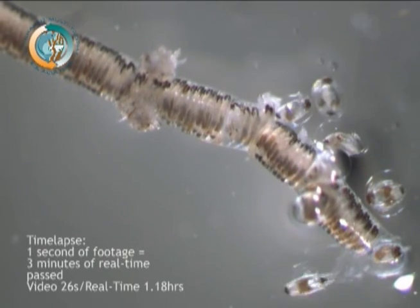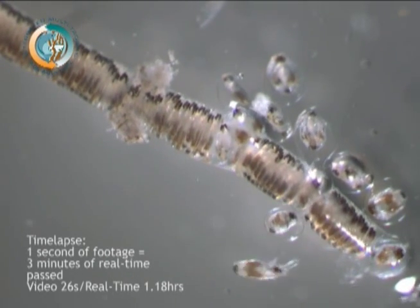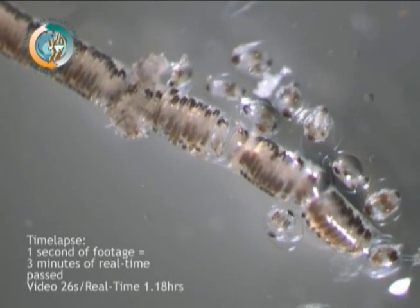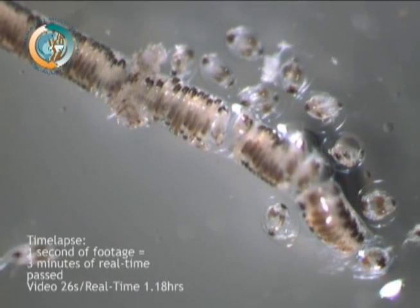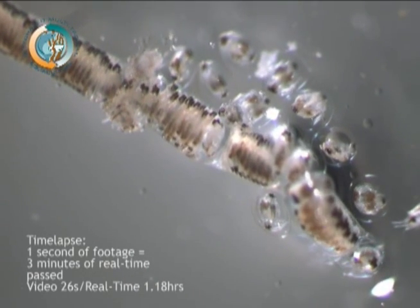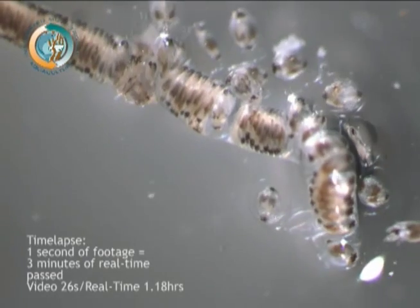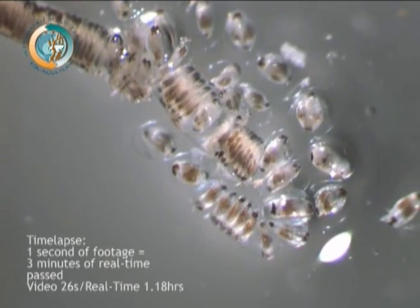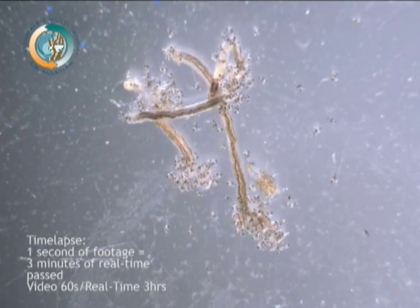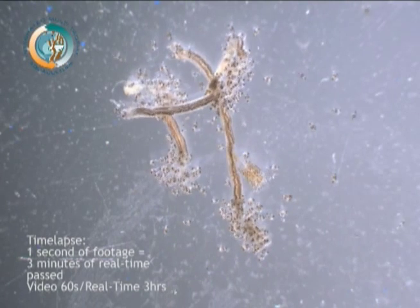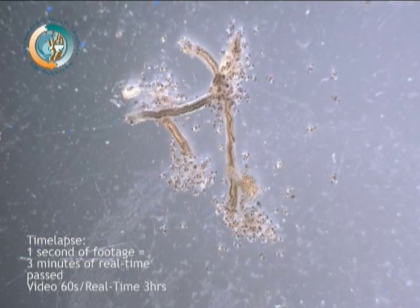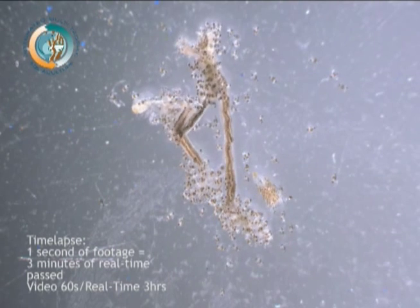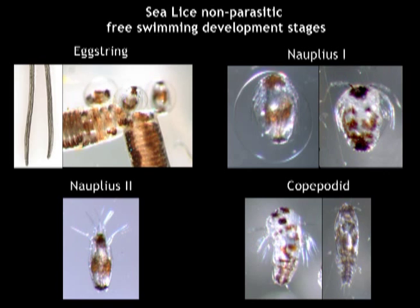You can see how the eggs are packed like pancakes in string, and upon hatching, the egg sacs swell and the nauplii are released. These free-living, non-parasitic development stages, including egg strings, nauplii and copepodids, could all be hatched and contained within the hatchery.